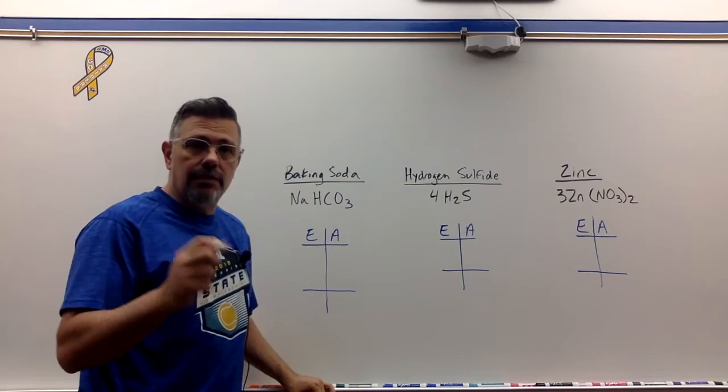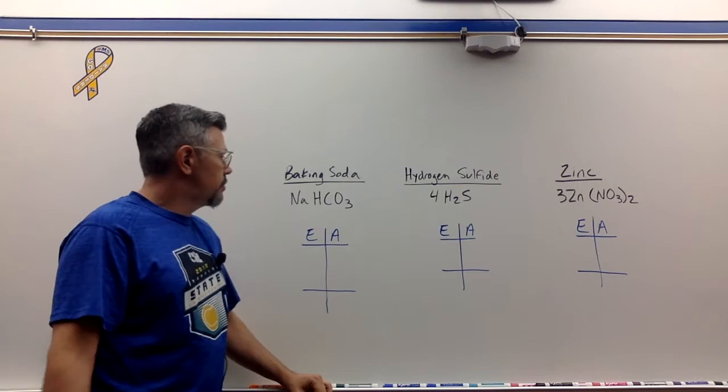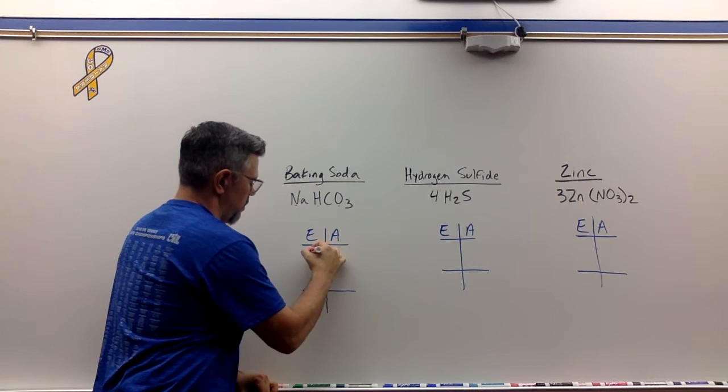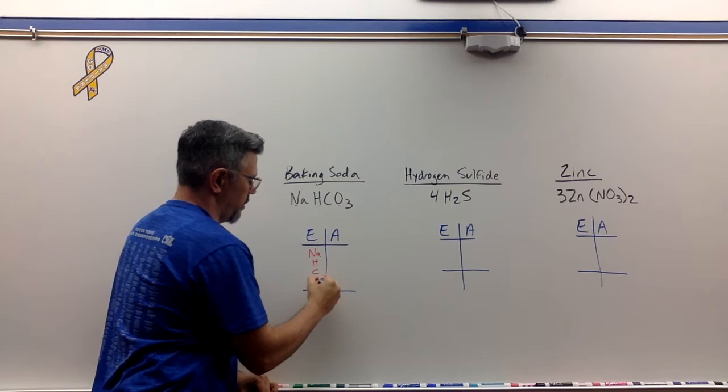One trick I do is I count the capital letters. The capital letters tell me how many elements we have. So I've got a capital N, capital H, capital C and O. The capital N and little a is sodium. And then we have H and we have C, we have O for a total of four elements.